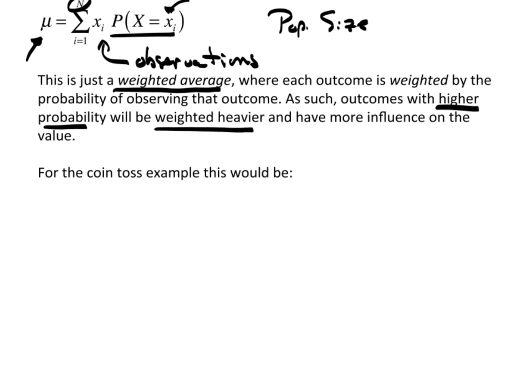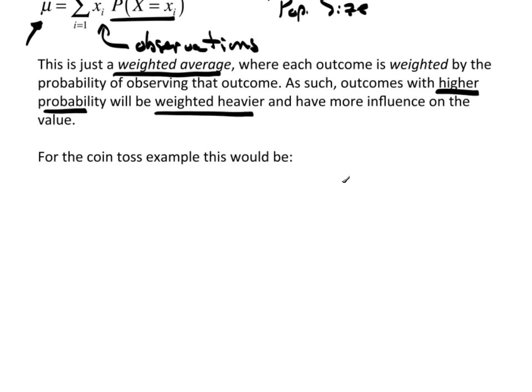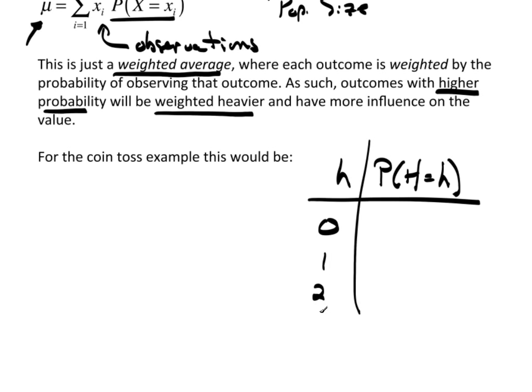So let's take a look at this for this coin toss example. Let's write this distribution out again. And we had H, the probability of the random variable, capital H, equals this little h. There's 0, 1, 2, 3, 4. That was all of our possibilities.